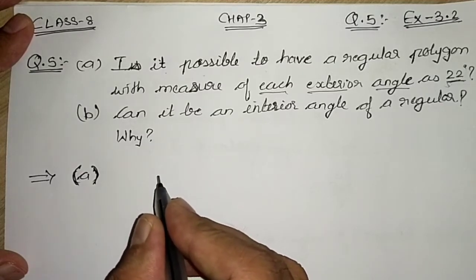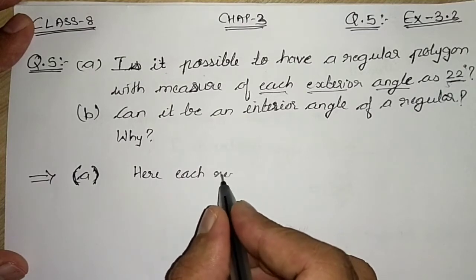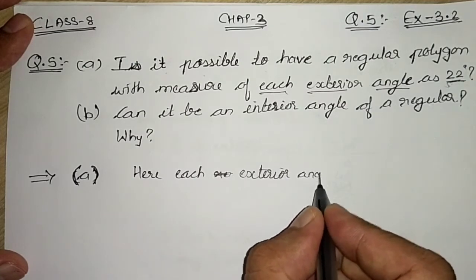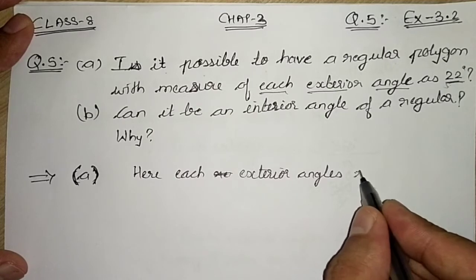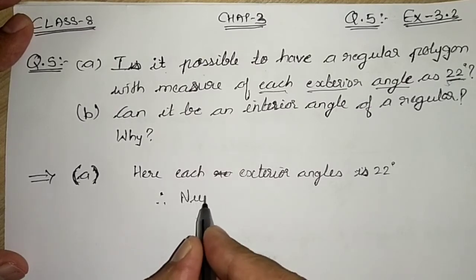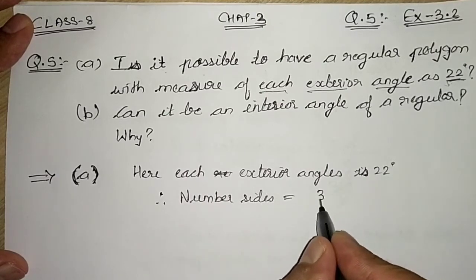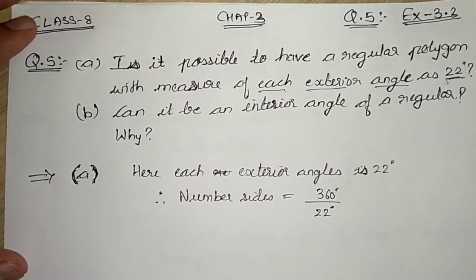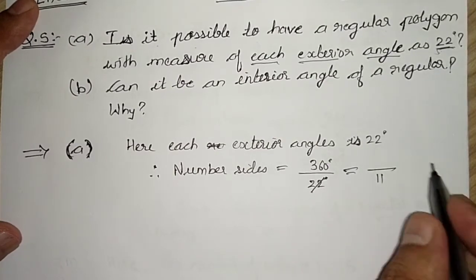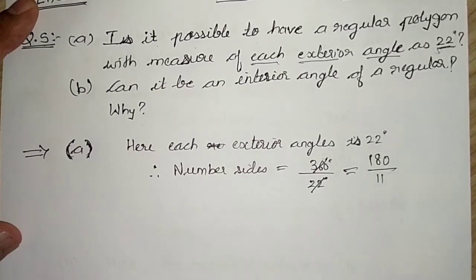So let us find out number of sides first. Each exterior angle is 22 degrees. Therefore, number of sides, you know the formula, it is 360 degrees divided by each angle. It can be cut by 2: 2 elevens are 22 and 2 ones are 2, 2 eights are 16. So it will be 180 by 11.